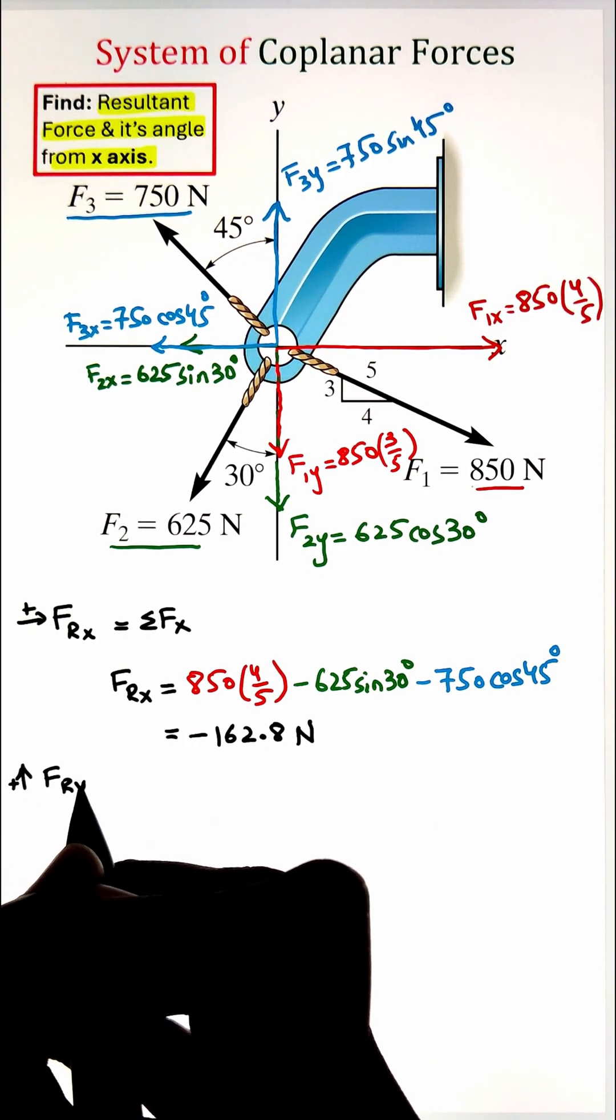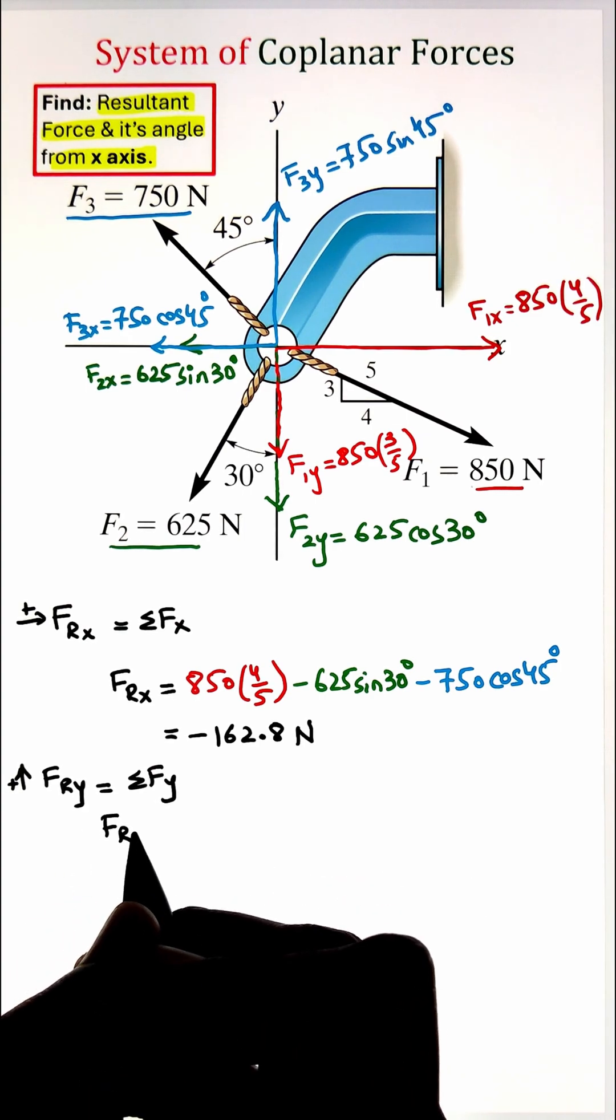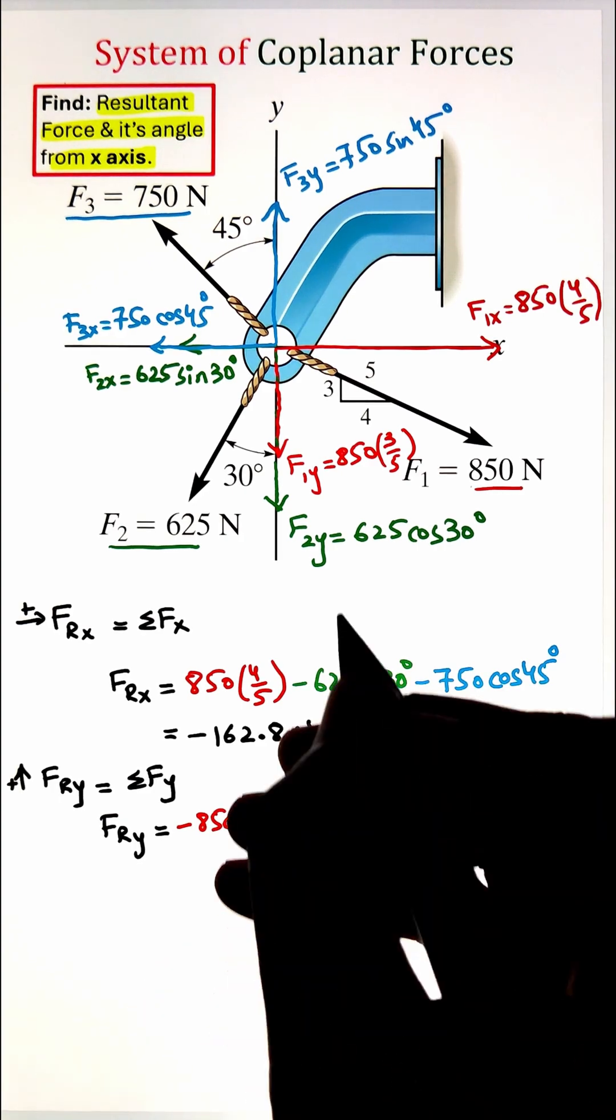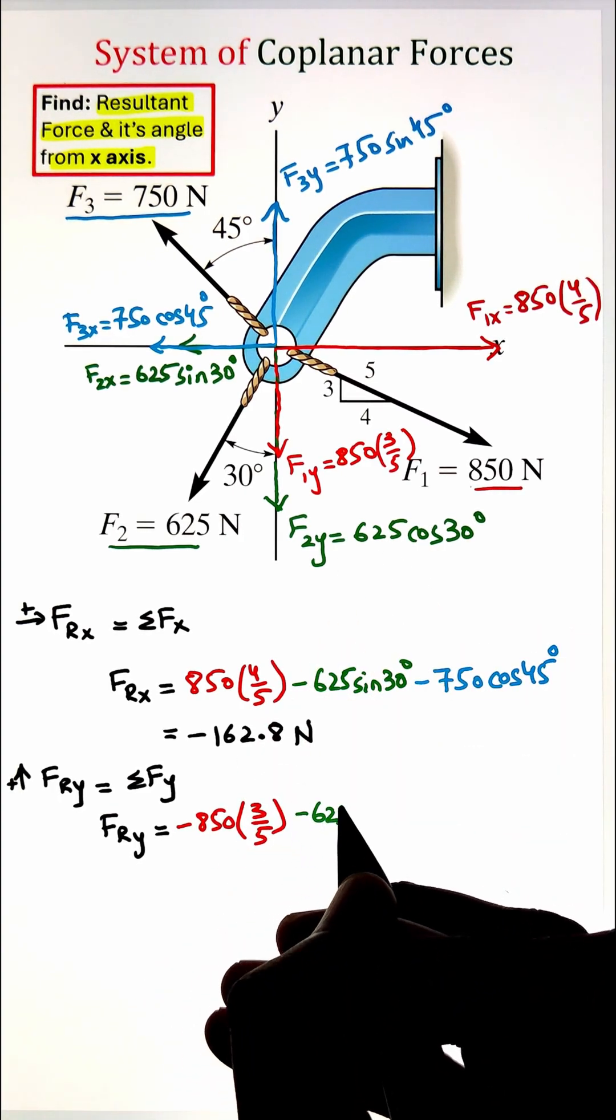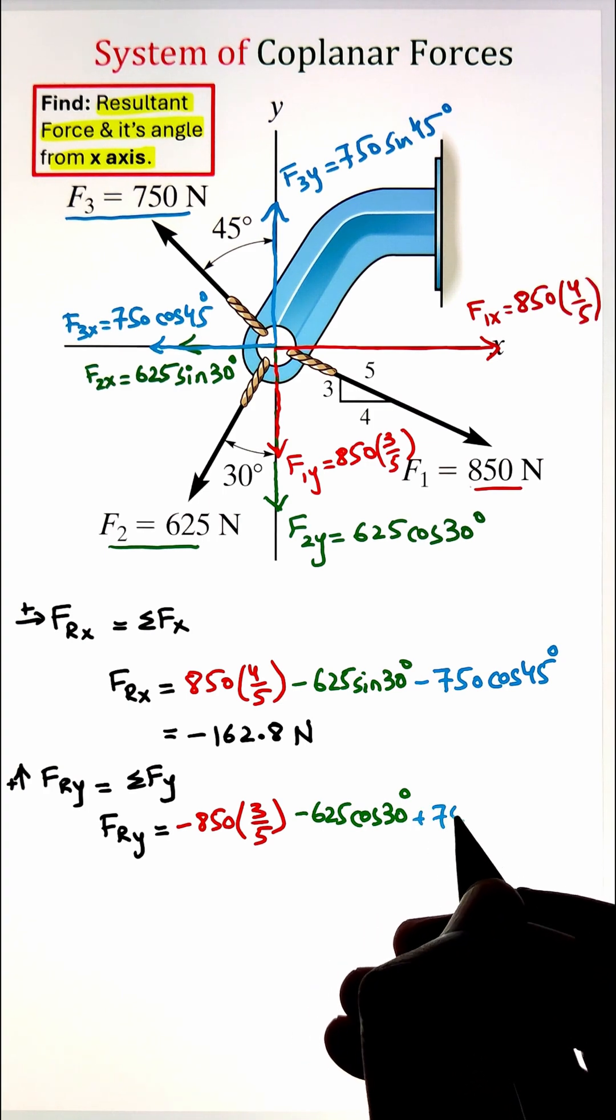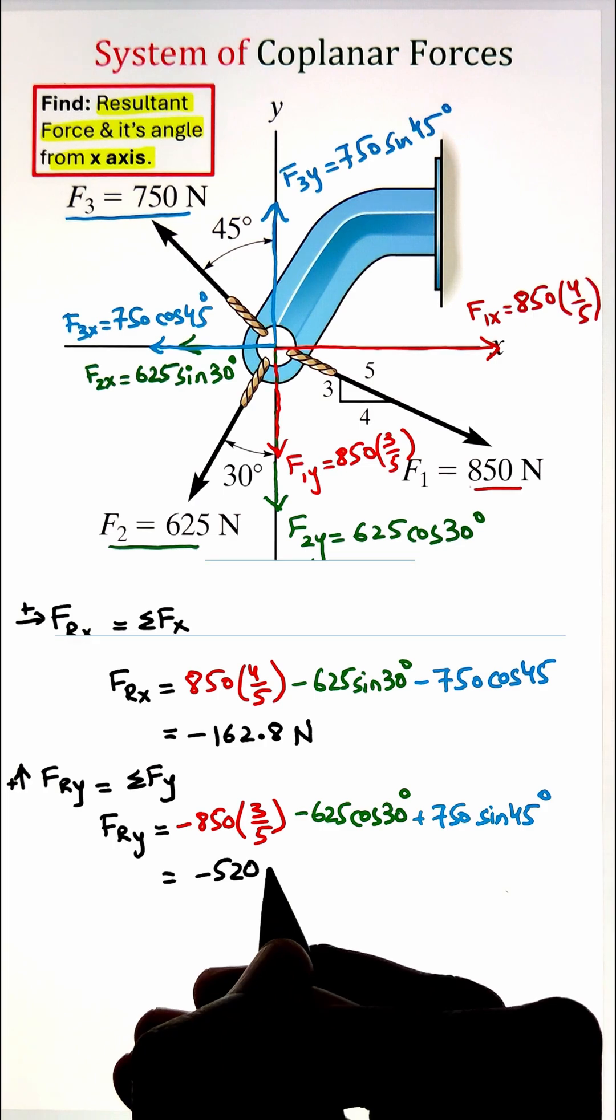Similarly, we can repeat this process for all the components in the y direction. Here I have F1y in the negative y-axis as well as F2y in the negative y-axis, whereas F3y is in the positive y direction. Adding them all gives us the resultant of negative 520.9 Newton.